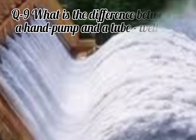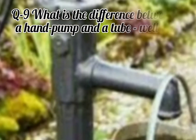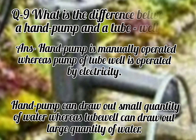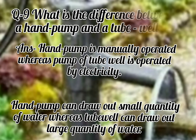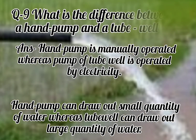Question number 9. What is the difference between a hand pump and a tube well? First difference: hand pump is manually operated, whereas tube well is operated by electricity. Second difference: hand pump can draw out a small quantity of water, whereas tube well can draw out a large quantity of water.